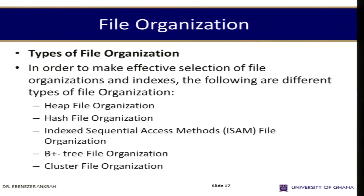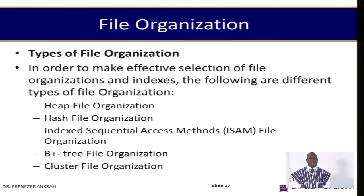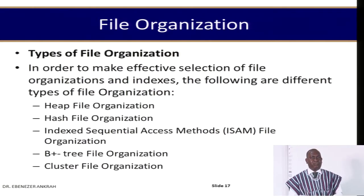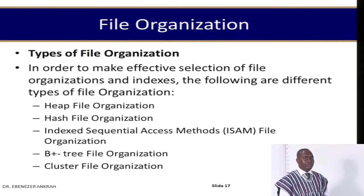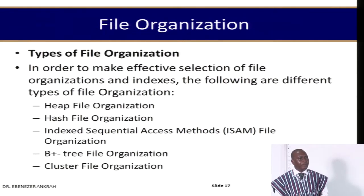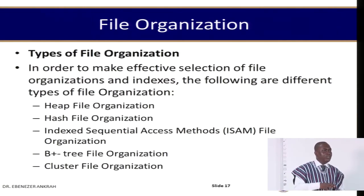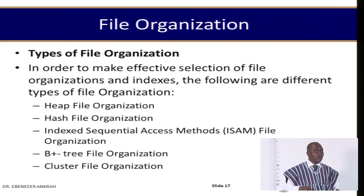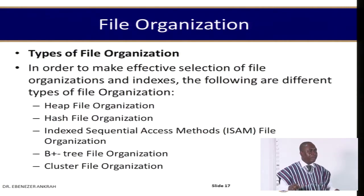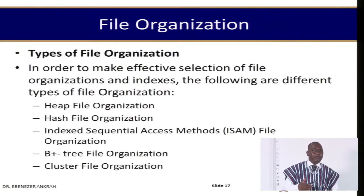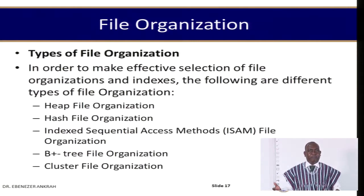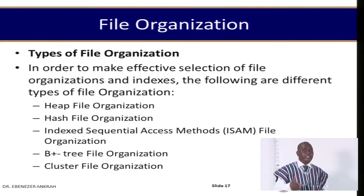There are different types of file organization. We can talk about heap file organization, hash file organization, the Index Sequential Access Method, the B-plus tree, and cluster file organization. Heap file organization is a form where files are added to the existing file irrespective of the arrangement — it's a first-come, first-saved manner. If you want to retrieve, you have to start from the beginning to the end.